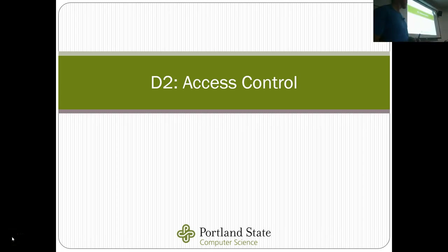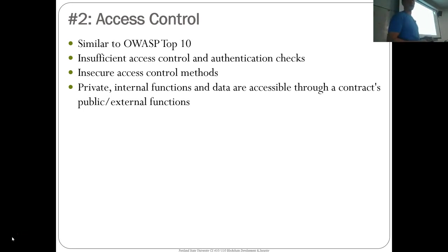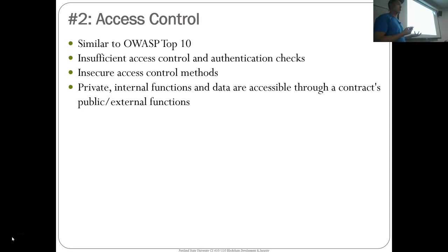The next vulnerability we're going to cover is access control, D2. This is similar to the OWASP Top 10 in terms of access control in your web app — same idea for smart contracts. You can have insufficient access control and authentication checks, insecure methods for doing access control. You can have private internal functions that are only intended to be called from within the contract that are made public and external, and that can cause an exploit.